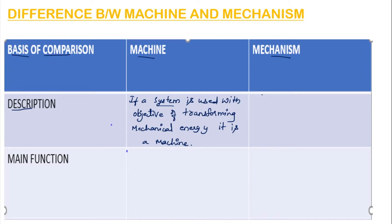Whereas, mechanism means: if a machine is used with the objective to transfer or transform motion without considering the forces involved, then that system is said to be a mechanism.